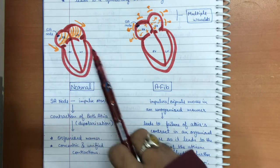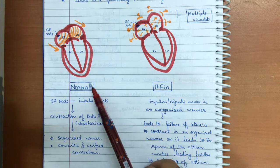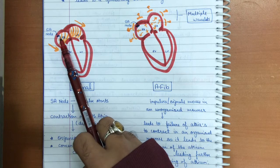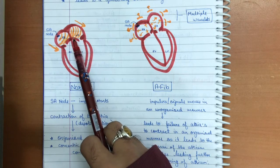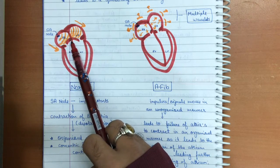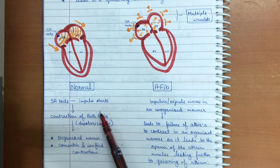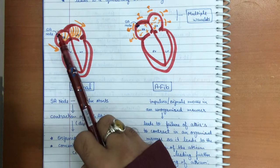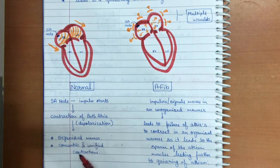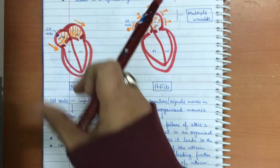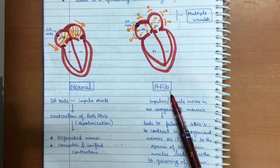Looking at the heart diagram, in normal conditions the SA node fires an impulse that spreads towards both the right and left atria simultaneously, causing depolarization of the atria before reaching the AV node. This leads to contraction of both atria in an organized, concentric, and unified manner — both atria contracting simultaneously.